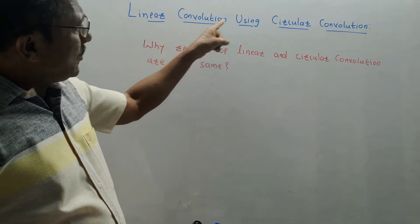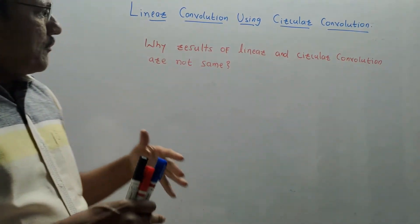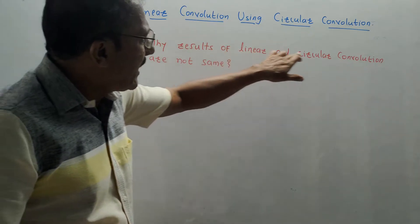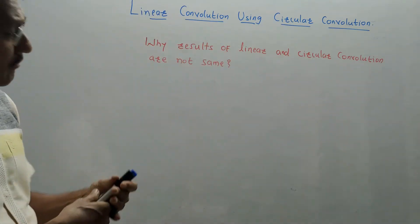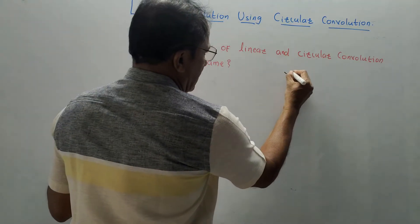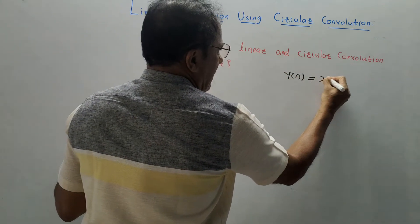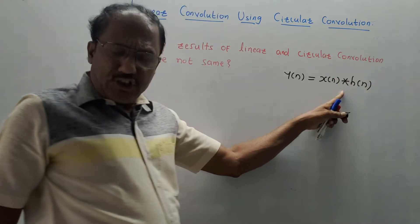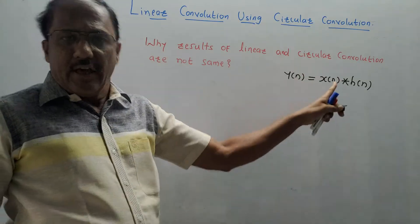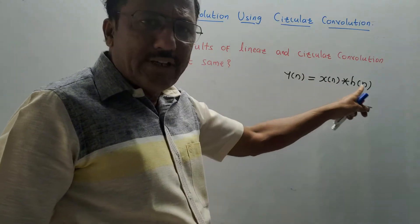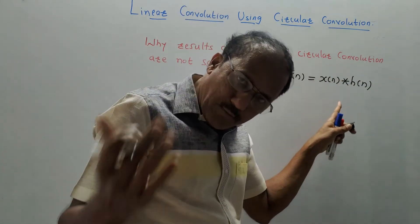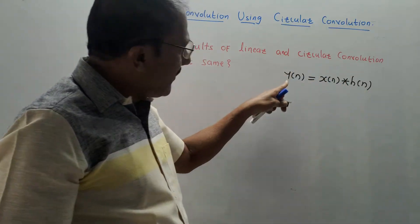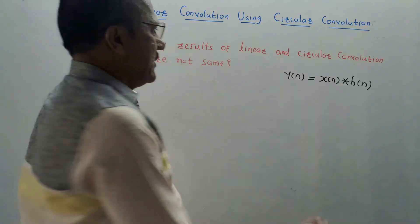Next is linear convolution using circular convolution. From the exam point of view, we will first discuss the answer to the question: why are the results of linear and circular convolution not the same? The linear convolution is denoted by y(n), expressed as x(n) asterisk h(n), where the asterisk represents linear convolution. x(n) is the input sequence and h(n) is the impulse response.